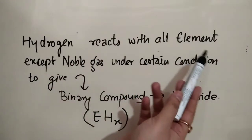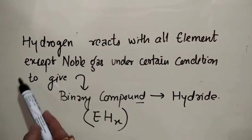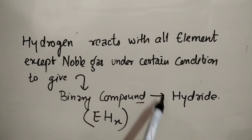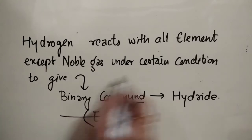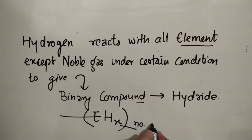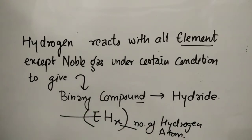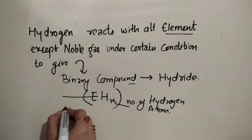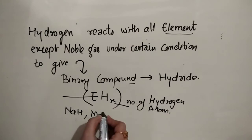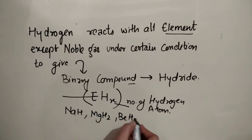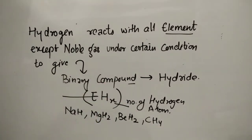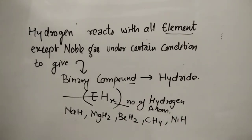Hydrogen reacts with all elements except noble gases under certain conditions to give a binary compound, and that binary compound is called a hydride, having the general formula EHX, where E is the element and X is the number of hydrogen atoms used. For example: NaH, MgH2, BeH2, CH4, and NiH.